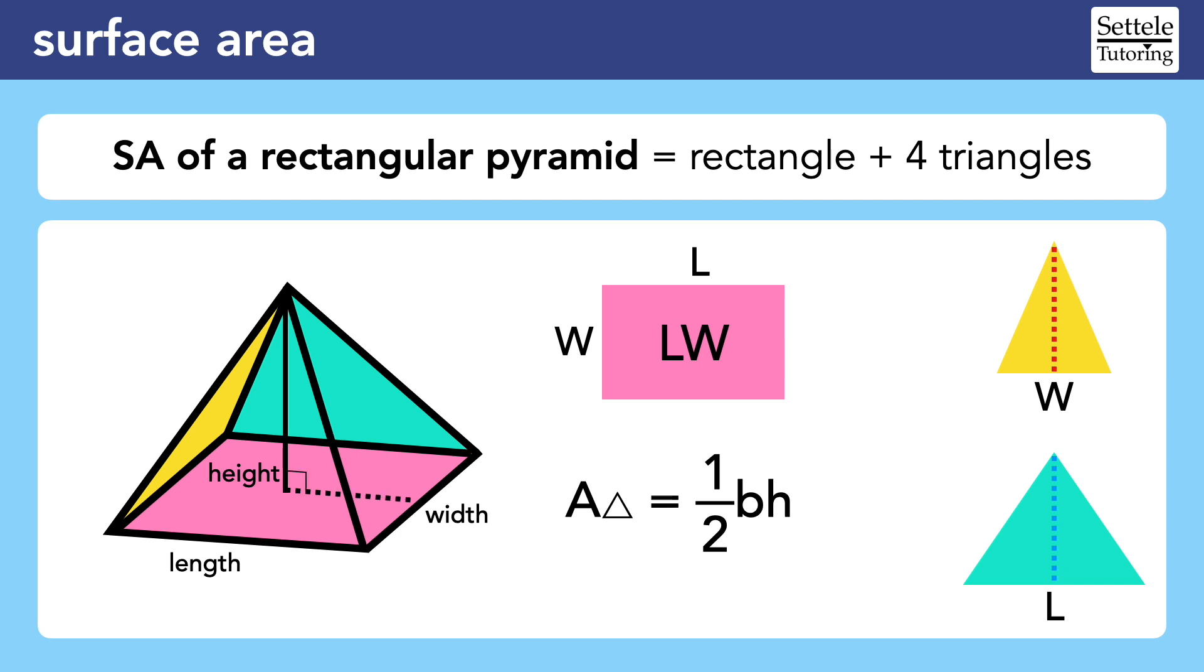In order to find the heights of the triangles, we need to make a right triangle inside of the pyramid, where the other leg is half the length of the rectangle and the hypotenuse is actually on the triangular face. We can use this new height to find the area of both the left and right side triangles.